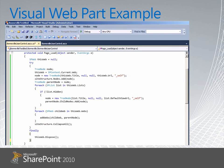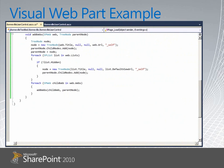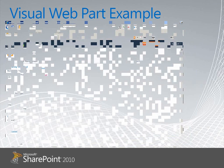Then we can add the node to the tree and start iterating through the lists collection. For each of those SPList type objects we can add additional tree nodes underneath the web's parent. We can also iterate through the subwebs and perform very similar actions to build up an entire structure. The addwebs function is just a helper function that adds additional tree nodes, extracting the title and URL for each subweb and iterating through its lists collection to build up our entire tree structure.